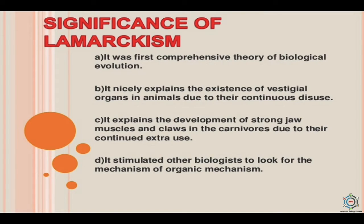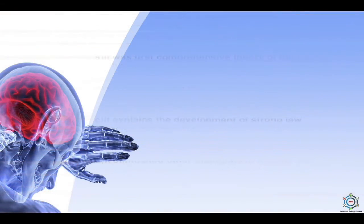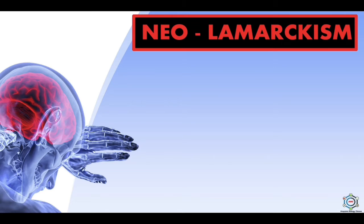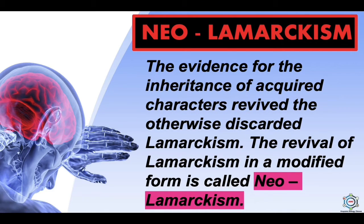The significance of Lamarckism: first, it was the first comprehensive theory of biological evolution. Second, it nicely explains the existence of vestigial organs in animals due to their continuous disuse. Third, it explains the development of strong jaw muscles and claws in carnivores due to their continued extra use. Fourth, it stimulated other biologists to look for the mechanism of organic evolution. The evidence for the inheritance of acquired characters revived the otherwise discarded Lamarckism. The revival of Lamarckism in a modified form is called Neo-Lamarckism.